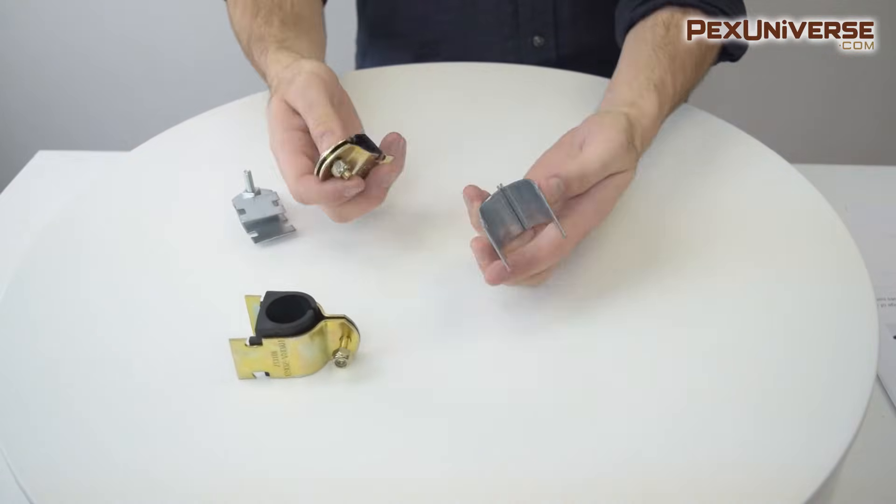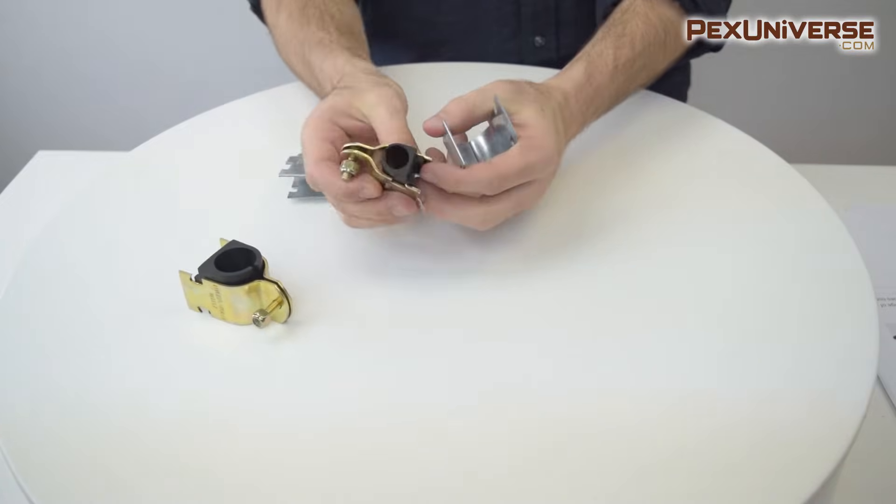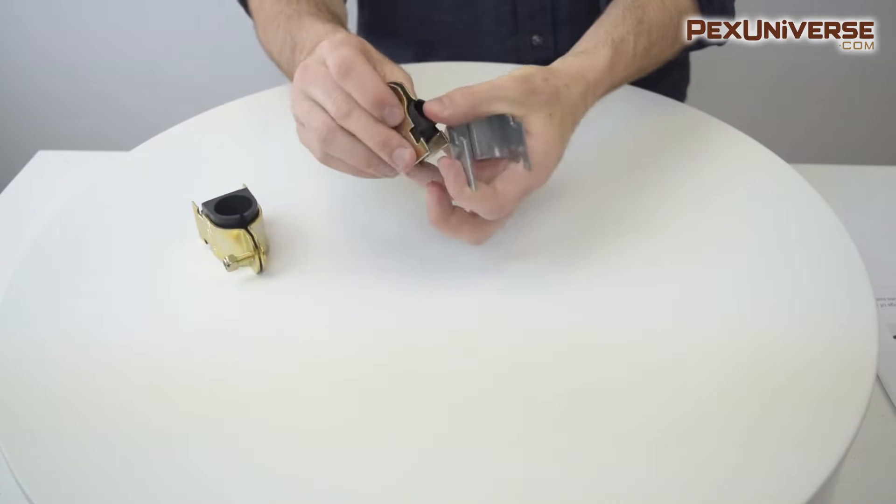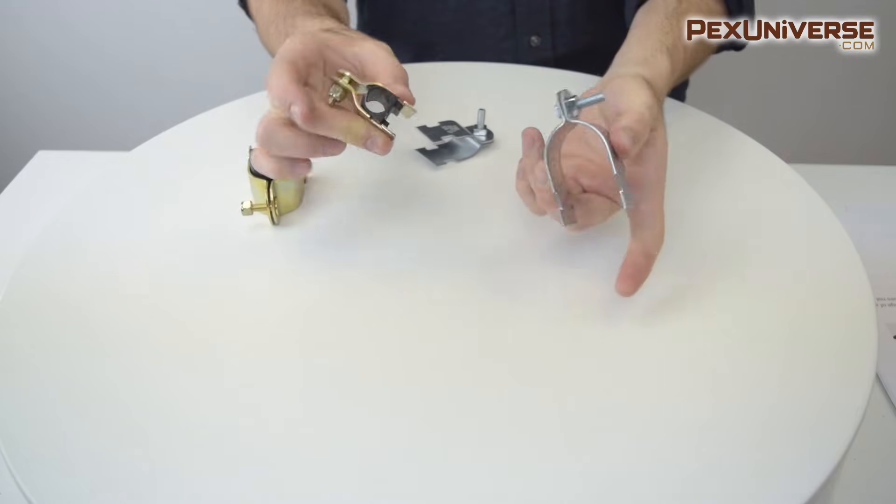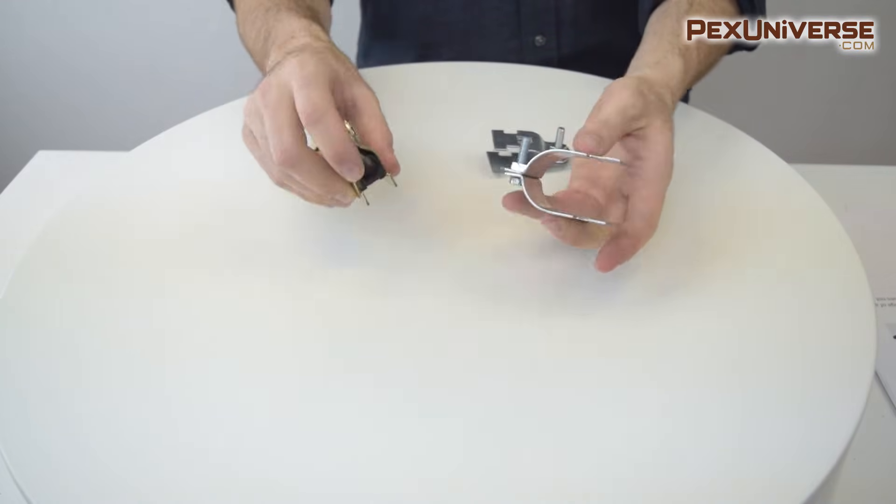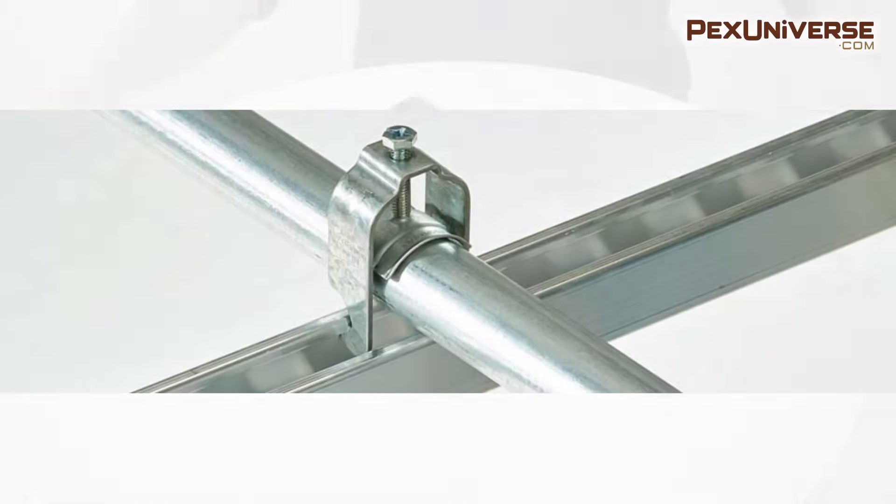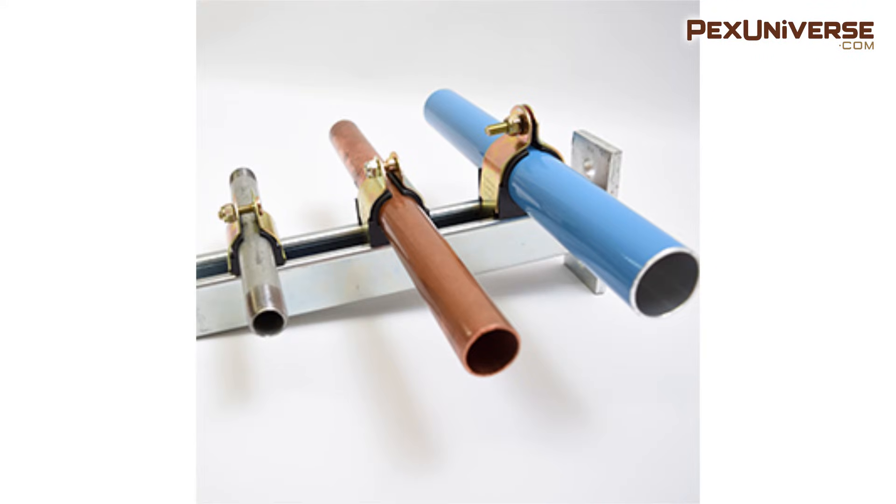Strut clamps are used to secure vertical or horizontal pipe runs to standard strut channel. Each clamp includes two brackets, one bolt and one nut. These are also called Kindorf clamps because they're used in combination with strut and Kindorf. Use cushioned clamps for copper pipe and standard clamps for all other types.